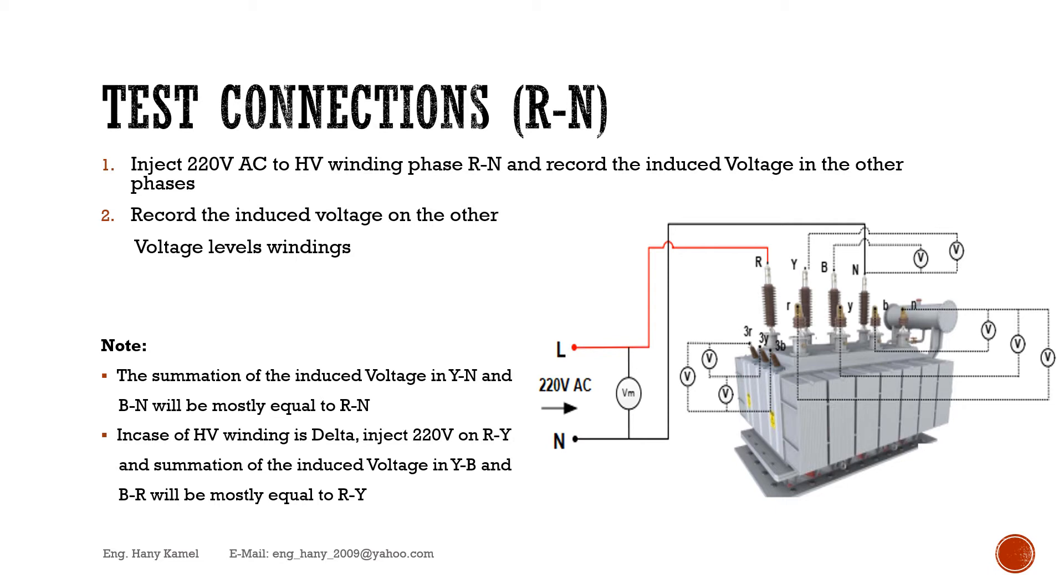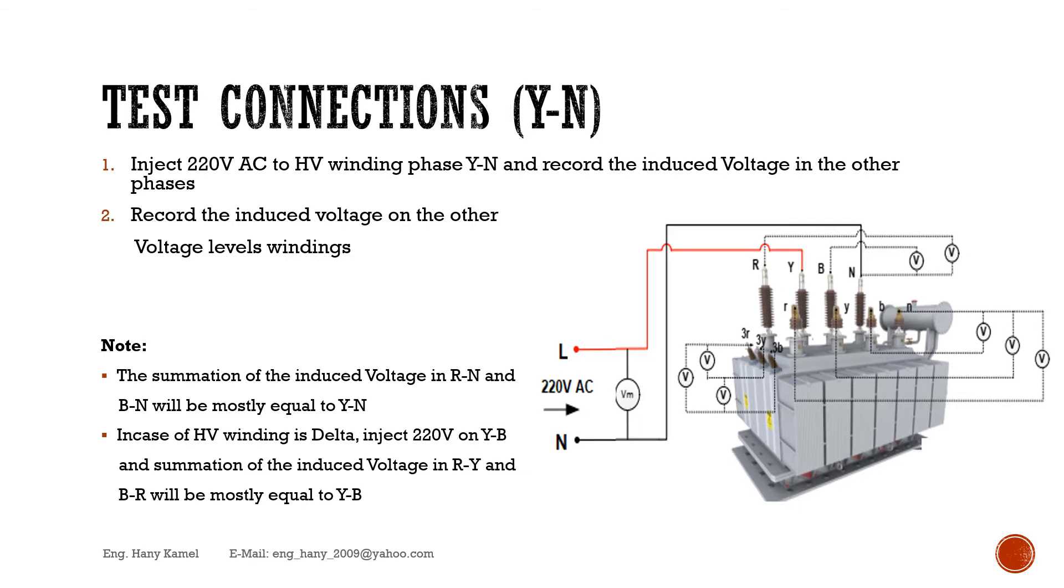In case of HV winding is delta, inject 220 volts on R-Y and summation of the induced voltage in R-N and B-N will be mostly equal to Y-N.